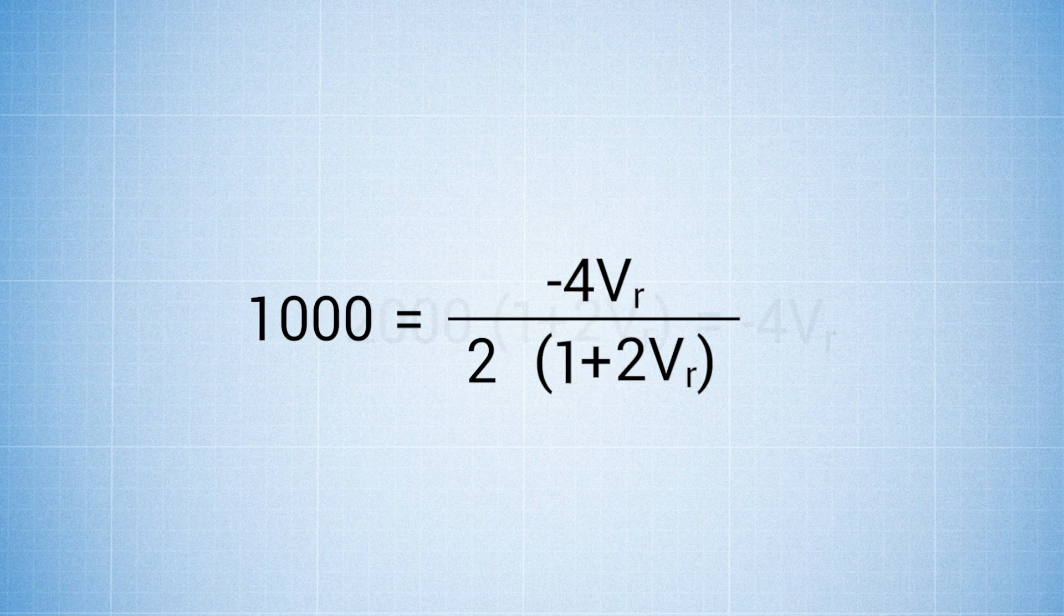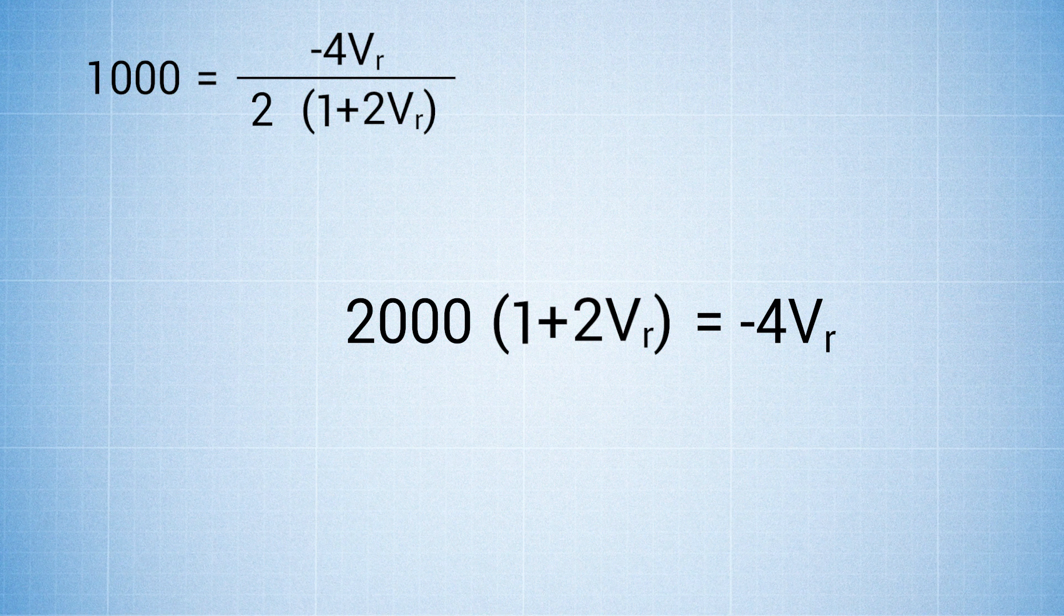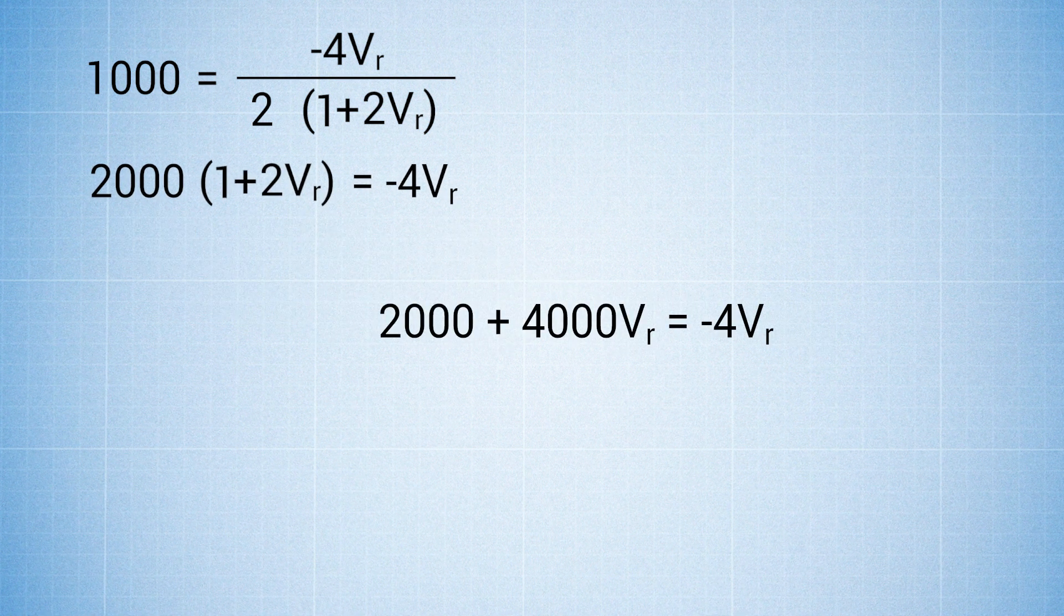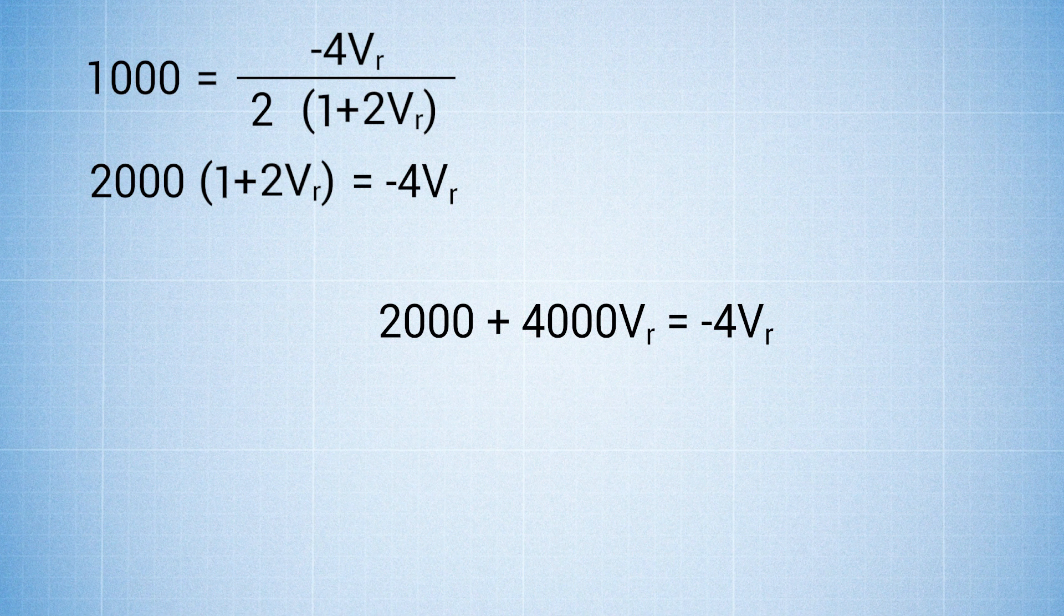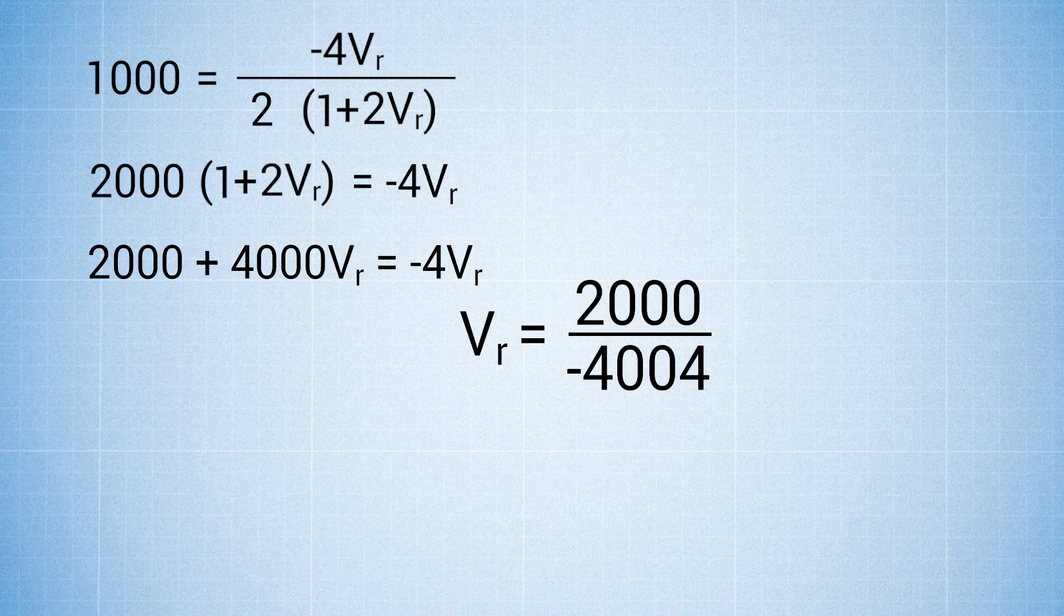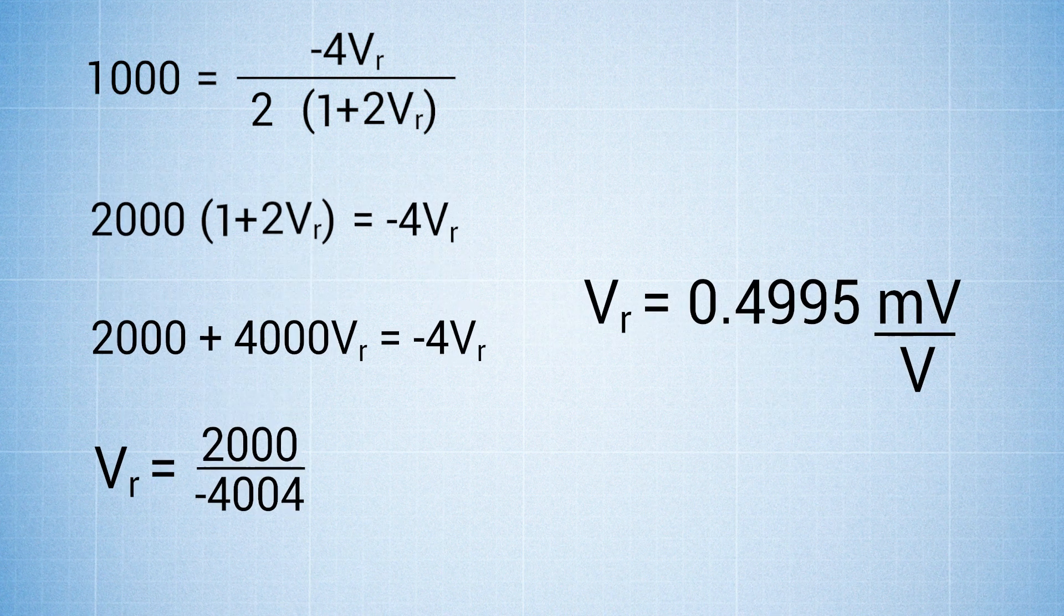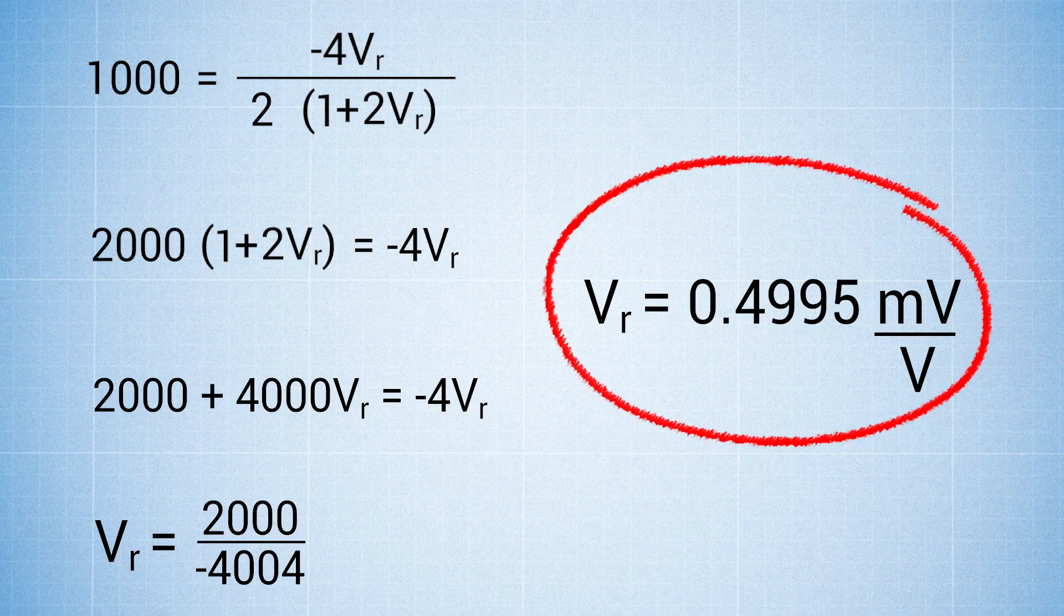This becomes 2,000 times 1 plus 2Vr equals negative 4Vr. So you get 2,000 plus 4,000Vr equals negative 4Vr. Vr equals 2,000 over 4,004. If you did the math, Vr equals 0.4995 millivolts per volt. That's your change in resistance between strained and unstrained state.